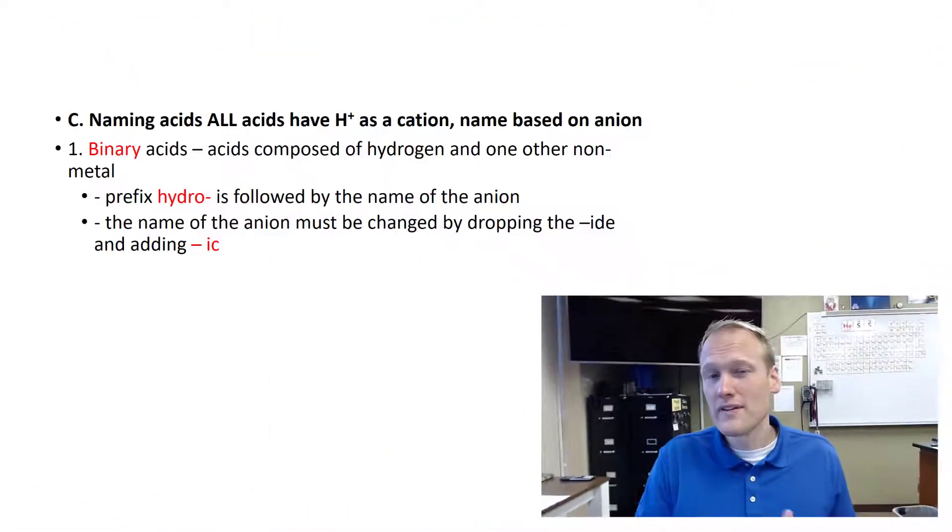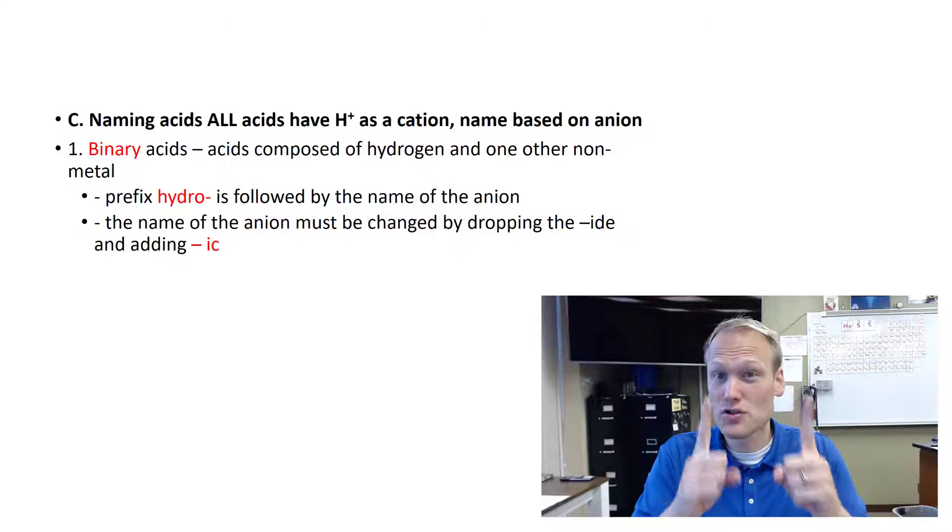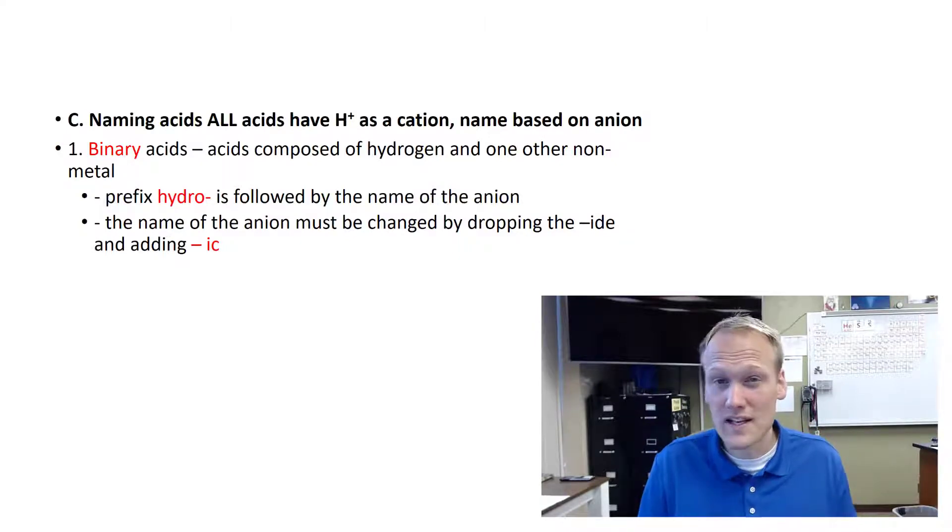Let's get started. There are two different types of acids that you need to know how to name: binary acids and oxy acids. Their name kind of tells you what they might be. A binary acid is an acid that has two things, and one of those things will be an H+ cation.